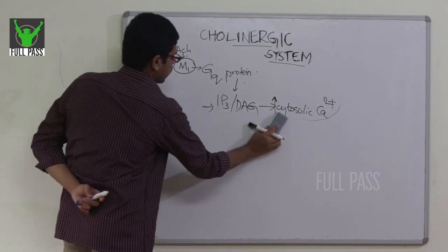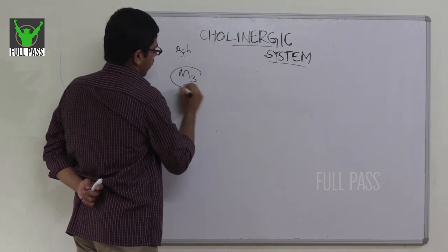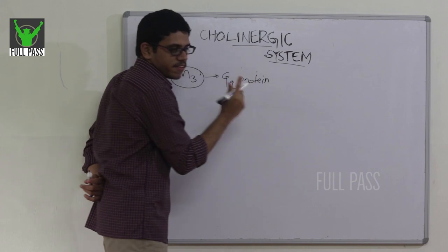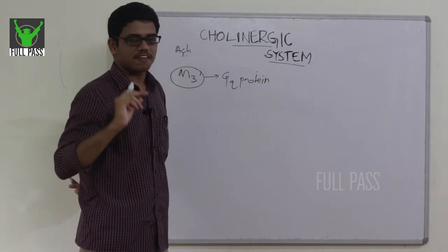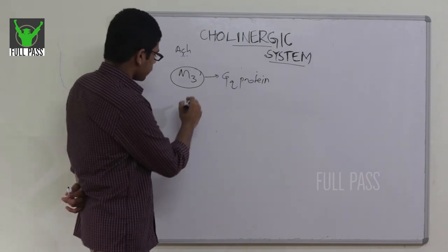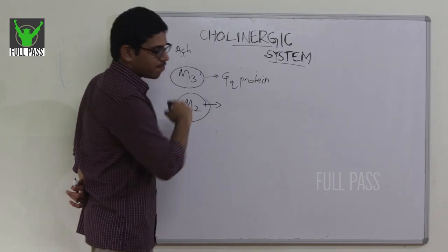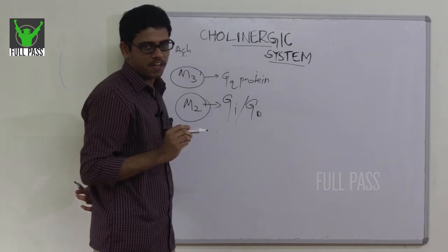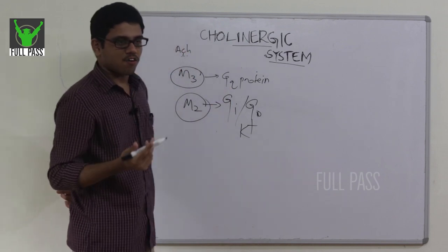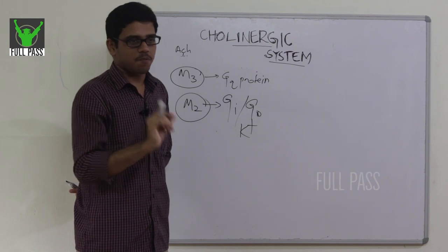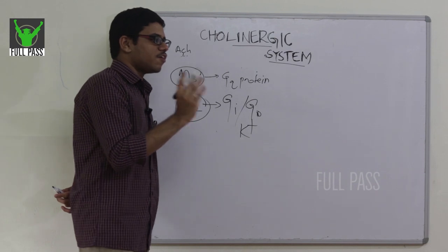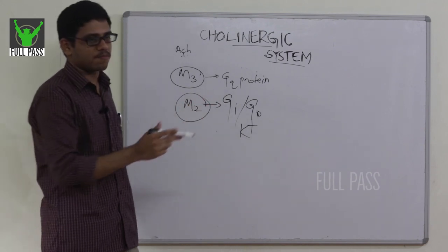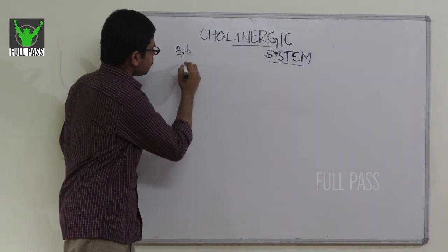M3 receptor has the same mechanism as M1 — it also functions via a Gq protein-coupled receptor through the IP3/DAG and phospholipase A2 pathways, increasing cytosolic calcium. The key difference is M2, which acts via a Gi (inhibitory) protein, also called Gi/G0. This results in potassium channel opening, causing hyperpolarization and a decrease in response — essentially an inhibitory cycle.